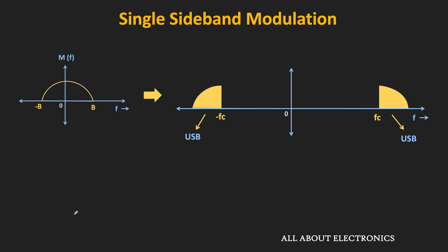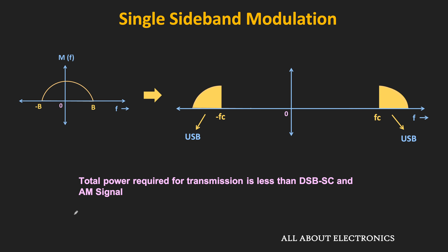Typically, single sideband modulation is used for voice signals — we will see why in the next video. The second advantage is that since one sideband and the carrier signal are suppressed, the total power required for transmission is less compared to DSBSC and conventional AM.